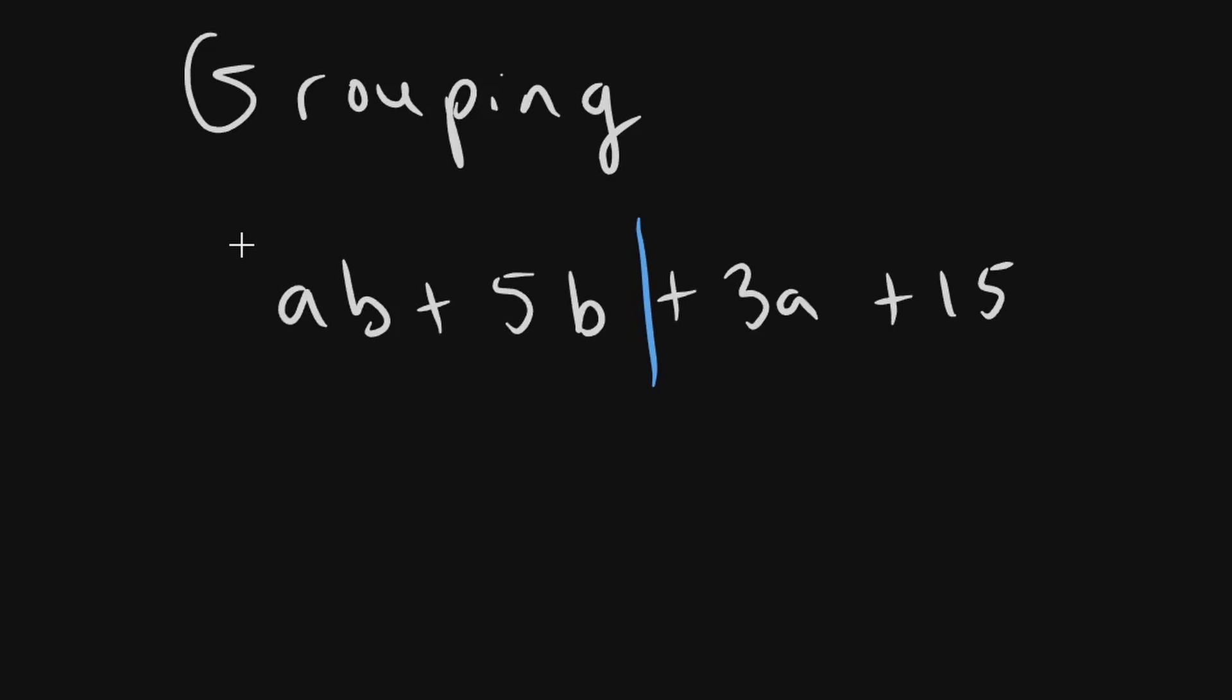And what I explained previously, highest common factor, you do that for both of these two. So first I'll take ab plus 5b. The highest common factor here is b. So b comes out. And in the bracket you have a plus 5.